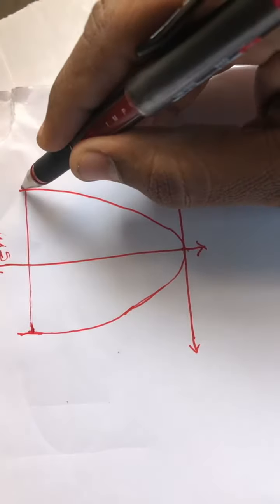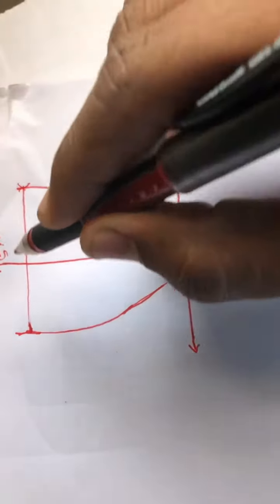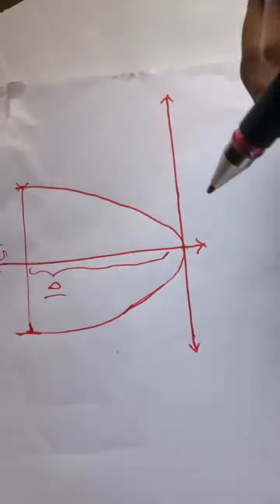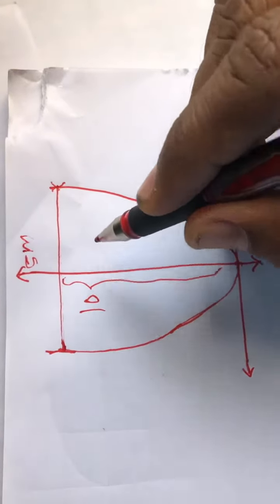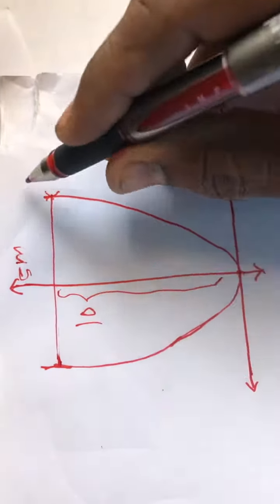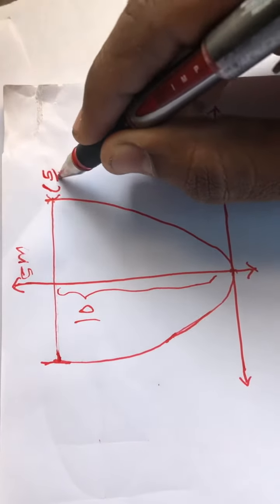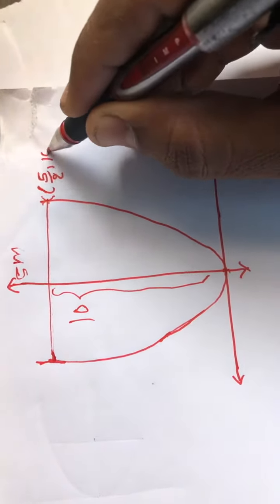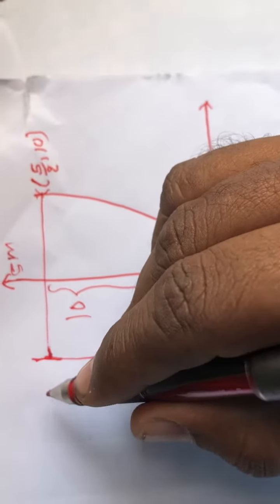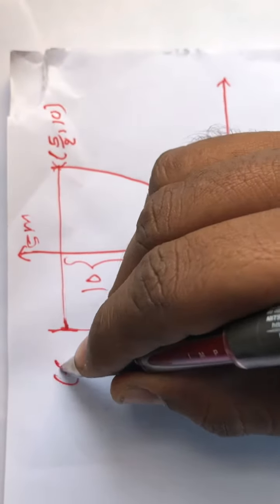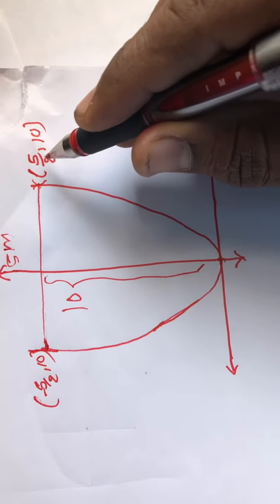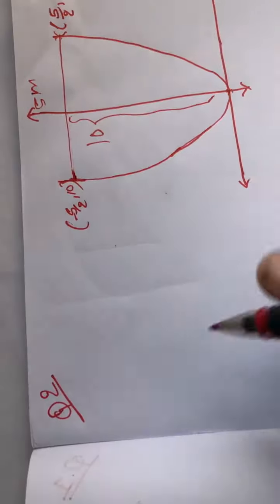This is 5 meters. This length is 10 meters. This is 10 meters and this is 5 meters. So 5 by 2 is 2.5. The point 5 by 2, 10 is a point of the parabola.